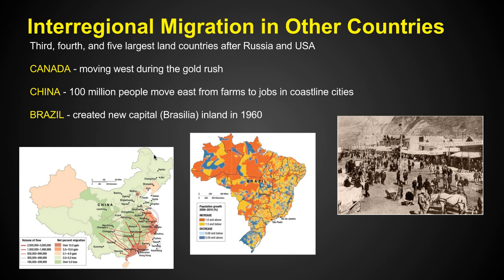We look at a few other countries with inter-regional migration — migration between regions. Besides the United States and Russia, the other three largest land countries are Canada, China, and Brazil. Within China, we see people moving from rural areas of the west to the cities of the coast. Over this period, about a hundred million people have moved east, leaving farm jobs to seek work in coastal cities. Within Canada, during the same time as the United States, people moved west because of the Gold Rush, so Canada's center of population pretty much echoes that of the United States.